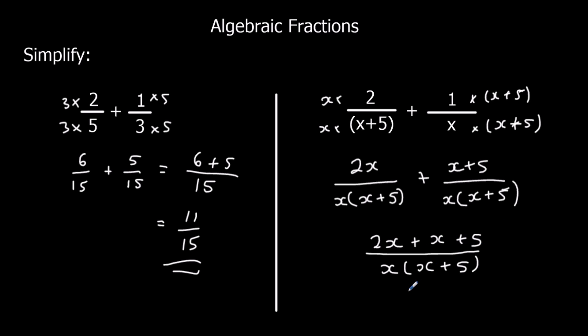2x plus x, to simplify the top line, is just 3x. So 3x plus 5 over x times x plus 5. And that's our final answer.